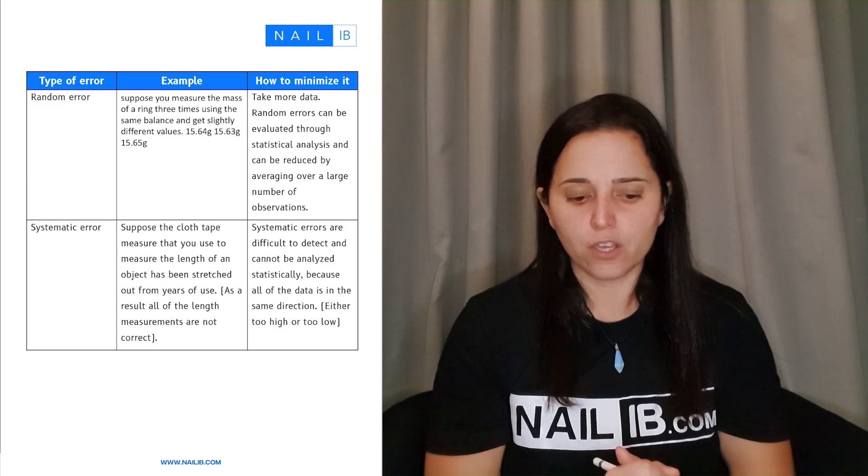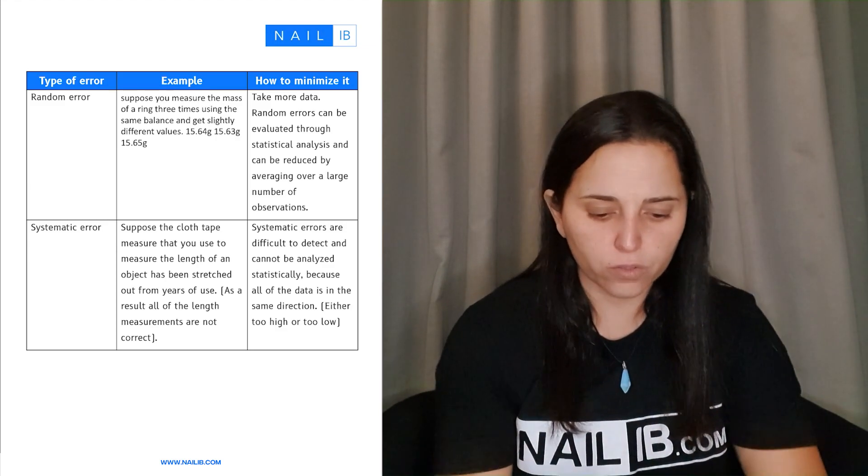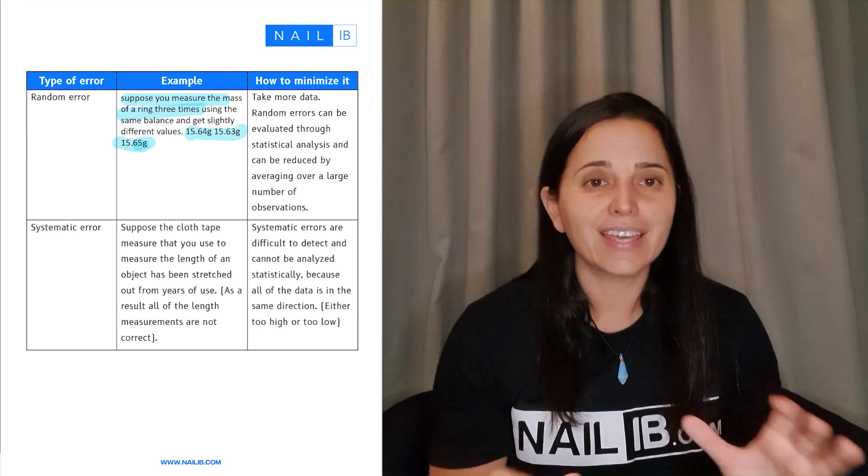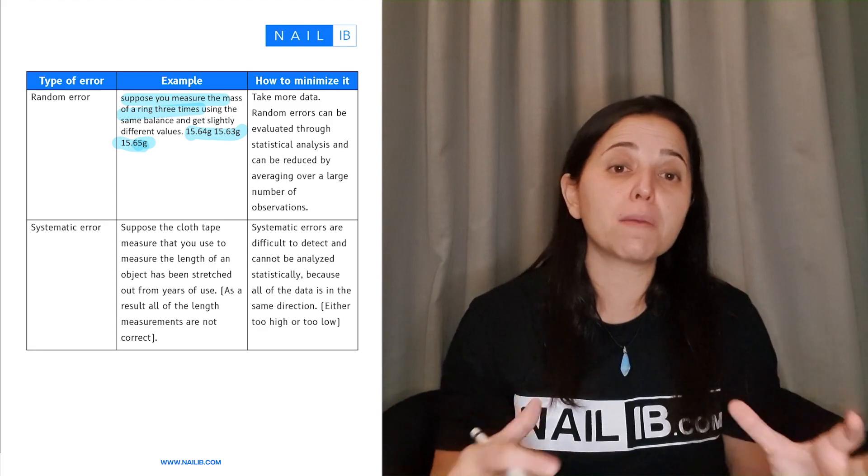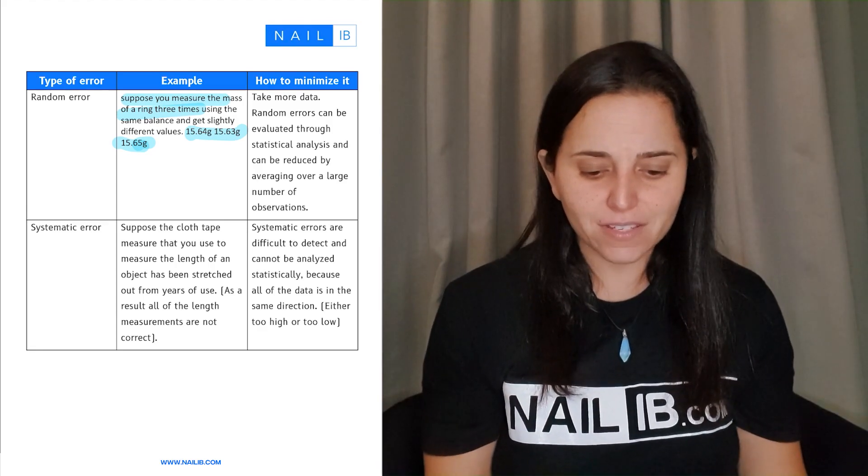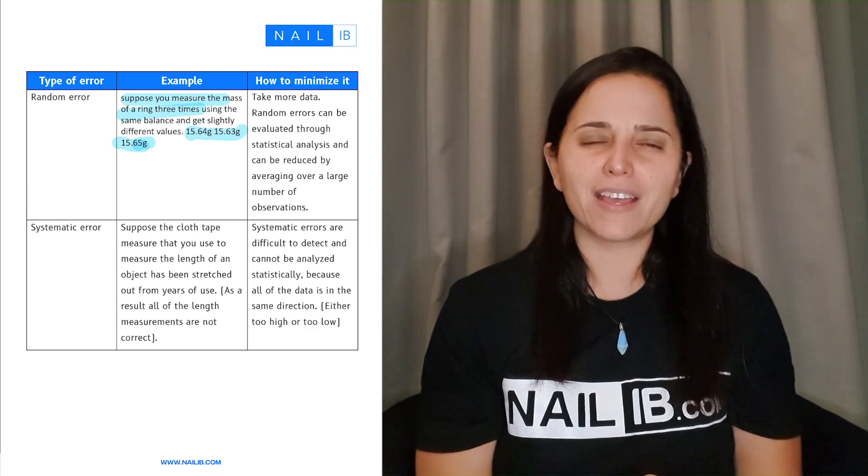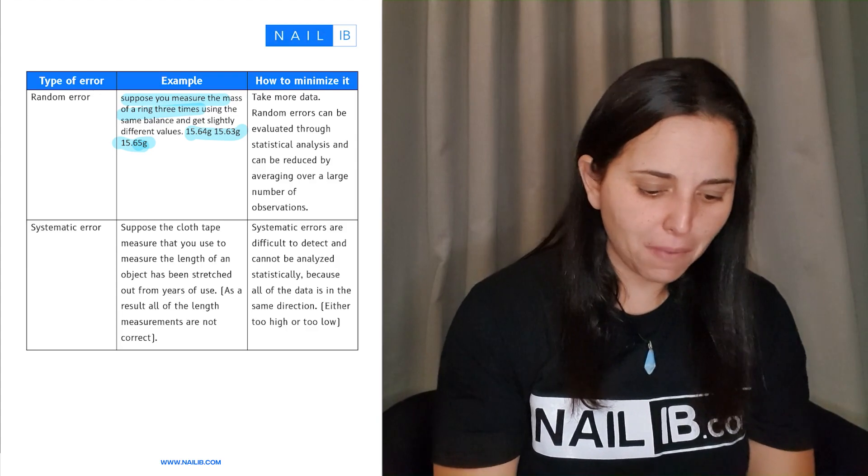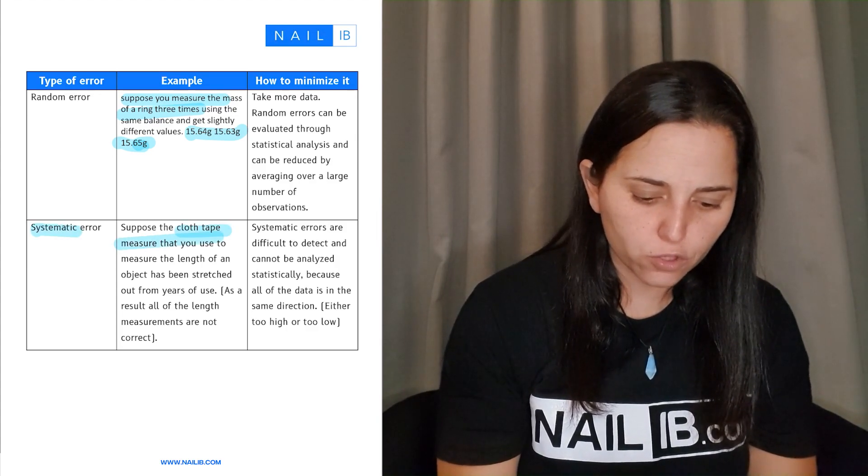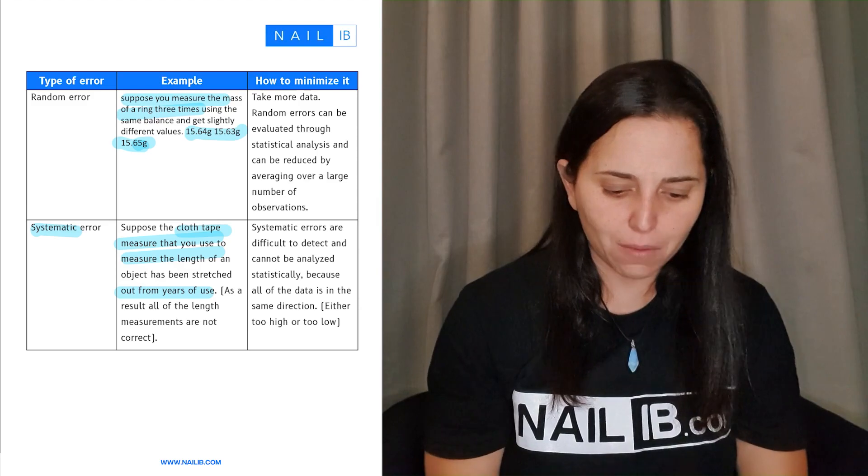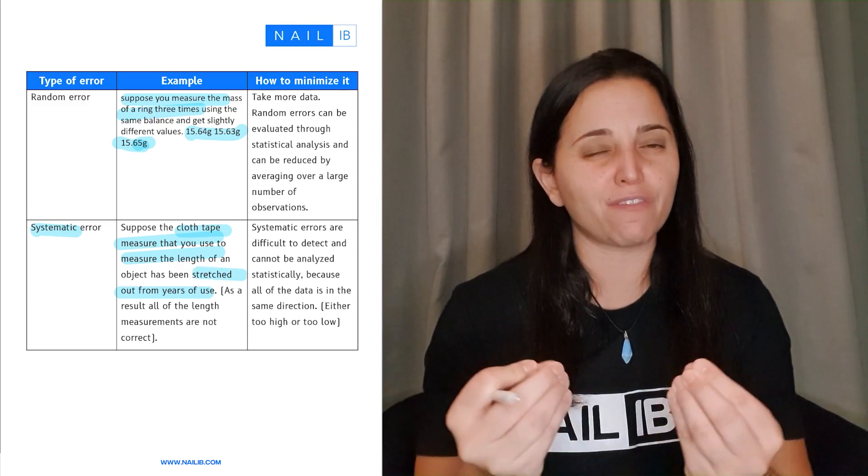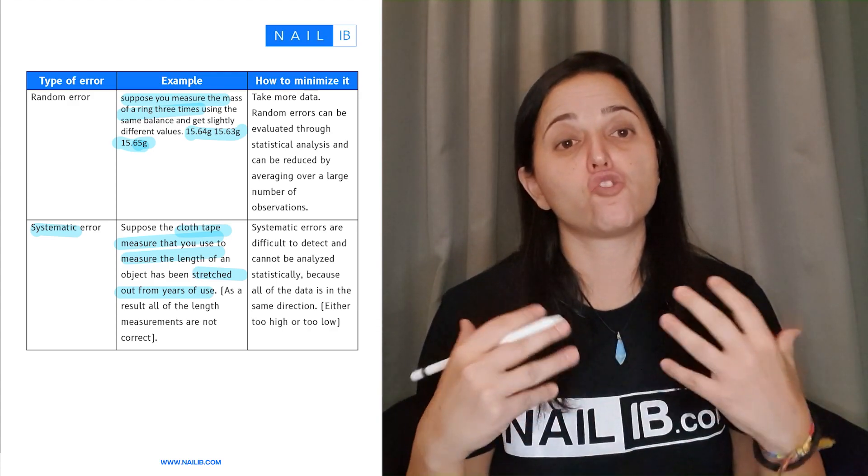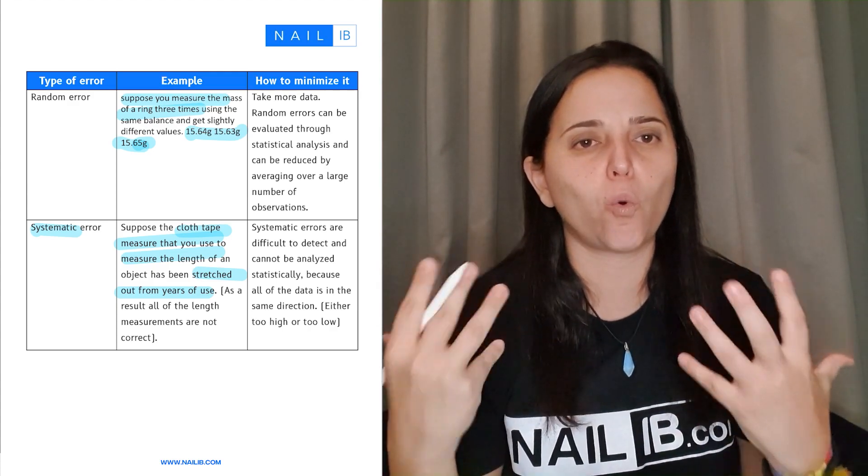Here's how you put it in the table. For example, type of error: suppose you measure the mass of a ring three times but every time it came out different because maybe the way you positioned it every time, that wasn't expected, right? So what do you do to minimize random errors? You do more data, more trials. Systematic error: if you had a cloth tape used for so long that it became very stretched, you cannot rely on the measurements of that cloth tape. With systematic errors, change and find better equipment to fix the problem.